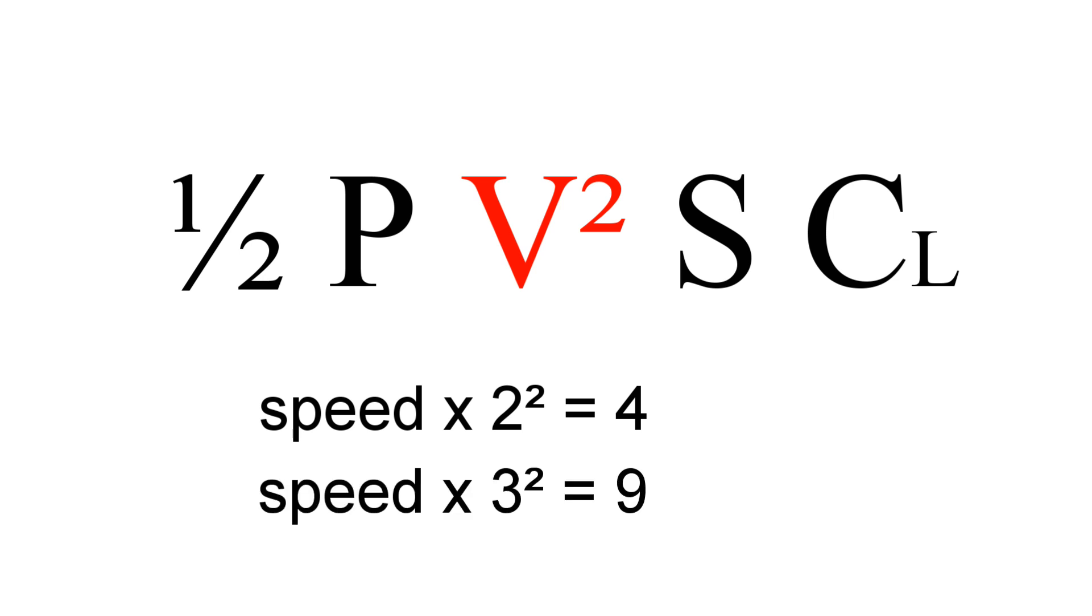This is why for an airplane to go twice as fast, you basically need four times as much thrust. When we want to go faster, we pay a steep penalty. Most airplanes can barely double their speed, their indicated airspeed, within their operating range.